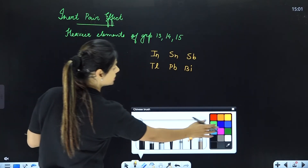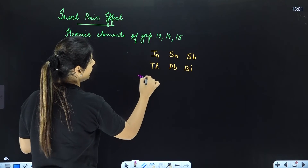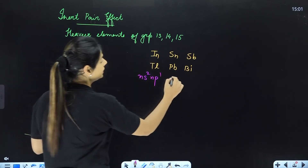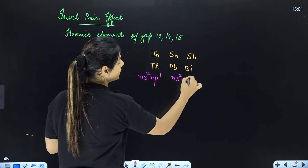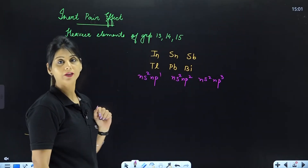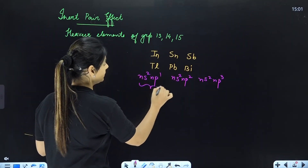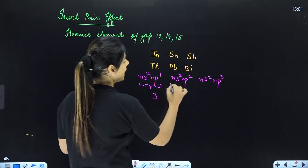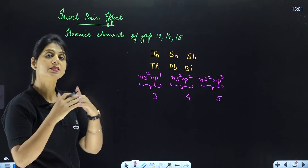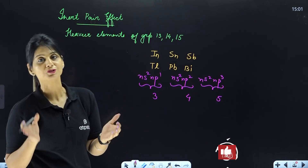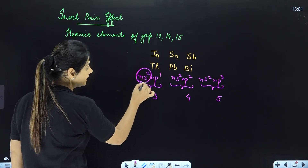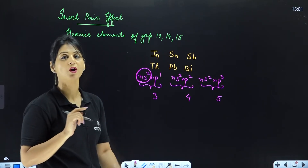So let's consider the valencies. The general configuration of group 13 is NS²NP¹, group 14 is NS²NP², and group 15 is NS²NP³. Normally, group 13 has valency 3, group 14 has valency 4, and group 15 has valency 5. But when the inert pair effect acts, the nuclear force of attraction increases on the valence shell, so the S² electrons become inert and do not participate in bonding.